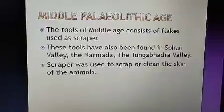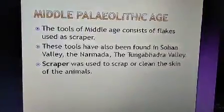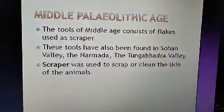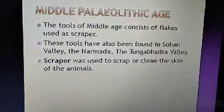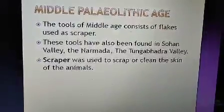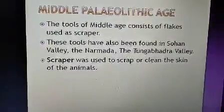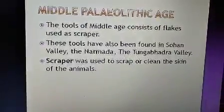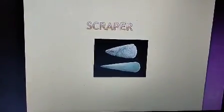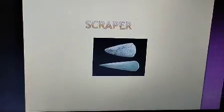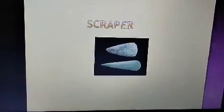Talking about the middle paleolithic age, the most important tool used by early humans was the scraper, mostly found in Sohan Valley, the Narmada Valley, and the Tungabhadra Valley of India. The basic usage of the scraper was to clean or scrape out the skin of animals. It was wide on one side and sharp at the other end.